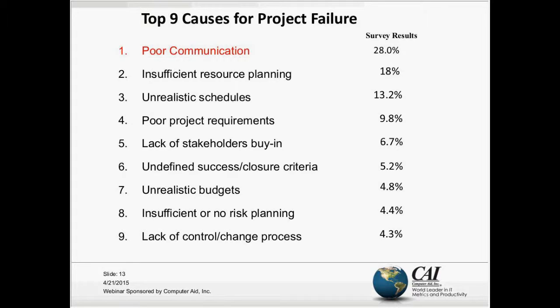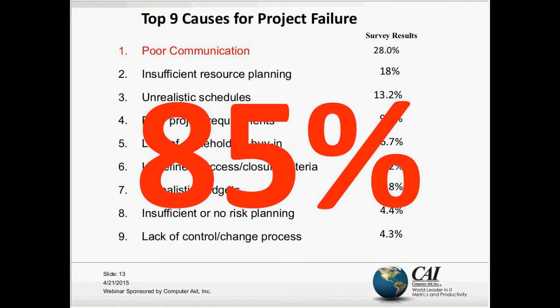When they did the original survey, they clearly weren't thinking from a pure communication perspective. But if you look at poor project requirements at 9.8%, I'd take a percentage of that and throw it up to poor communications — bumping it from 28% to maybe 29% or 30%, and taking a slice across the board. When I do that, I strongly believe that 85% of projects fail due to poor communications. I've done this for many years and I see constant trends of project managers not valuing communications, and therefore we see failures across all nine areas.